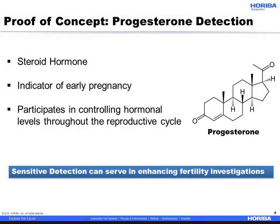For a proof of concept, we chose to work with progesterone, which is composed of four cyclic hydrocarbons containing oxygenated functional groups such as ketones, which serves as an indicator of early pregnancy, and participates in controlling hormonal levels throughout the reproductive cycle. Its sensitive detection in diverse matrices can assist in fertility investigations. It normally ranges in levels from less than 1 ng per ml in serum during the pre-ovulation phase of the menstrual cycle up to 20 ng per ml in mid-cycle, and to 300 ng per ml in pregnancy.